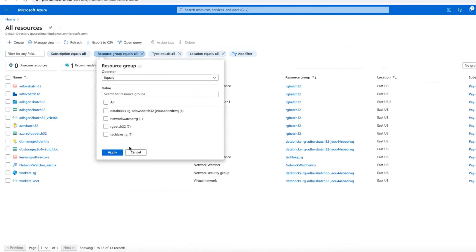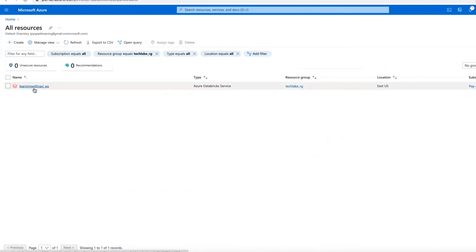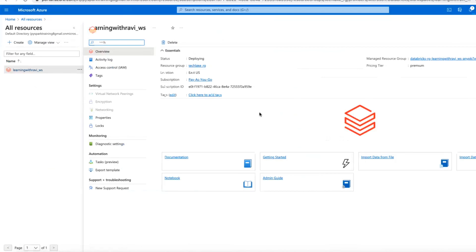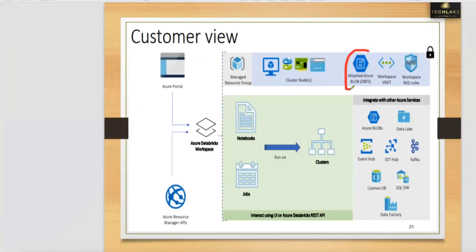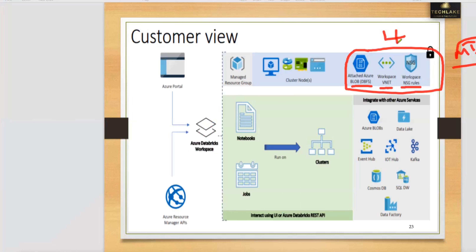You can filter with the resource group to find the workspace. Click on it and you'll see a separate resource group. Back-end, it will create separate services — resources — under that managed resource group. Those resources are: blob storage (where you can store all the data, accessible via DBFS), one virtual network, network security group rules, and one managed identity for role-based access control — total four resources for the workspace.